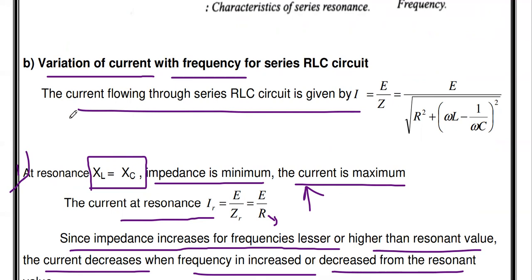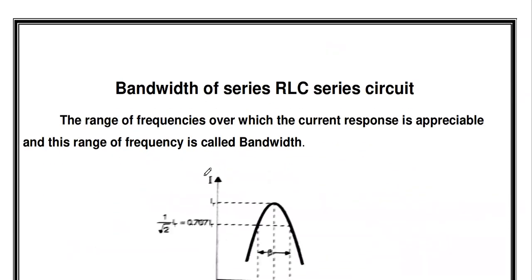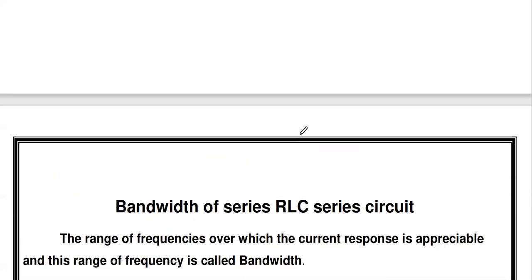This is the second characteristic — variation of current with respect to frequency in a series RLC circuit. In the next video, we will derive the bandwidth, half power frequencies, quality factor, and selectivity for the series RLC circuit.